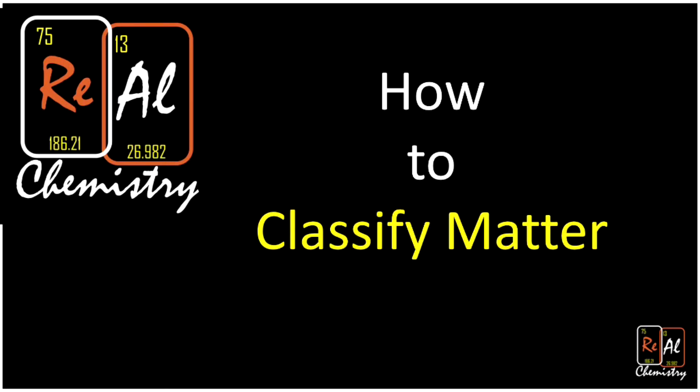Welcome to this episode of Real Chemistry. I'm Dr. Morris. Today we're going to be talking about classifying matter. Everything around us that takes up space is made of matter, and this lecture is designed to help you start to think about what all of that different matter is made of. We'll talk about what matter is made of and how to classify it into different categories. In the next video, we'll do practice problems using those categories — I'll link to that below.